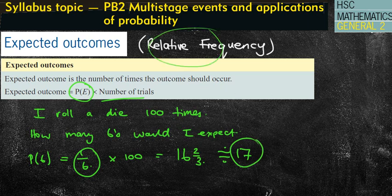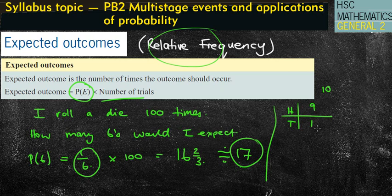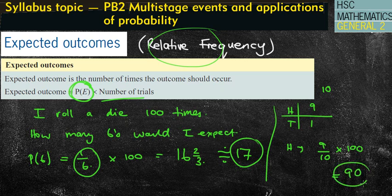Relative frequency is when they give you an actual experimental example. For instance, a heads and tails question: I flipped a coin 10 times, got nine heads and one tail. What's the probability that if I threw it 100 more times I'd get heads? Well, the probability is nine out of 10 from the experimental numbers, and then I multiply that by 100, giving 900 over 10, which is 90 times I would expect to get heads.